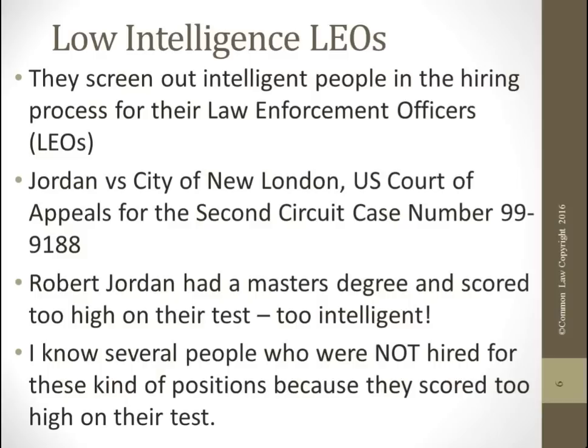You see it every night on TV — they're murdering somebody, and that's exactly what they want. Jordan versus New London, the U.S. Court of Appeals for the Second Circuit: Robert Jordan had a master's degree and scored too high on their test. He was too intelligent. They don't want anybody that's intelligent. They want thugs, and they're getting exactly what they want.